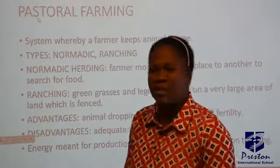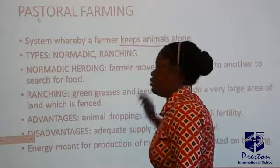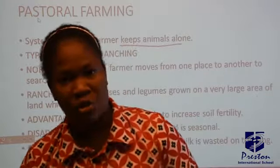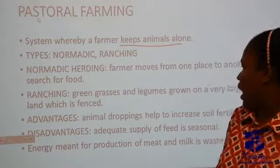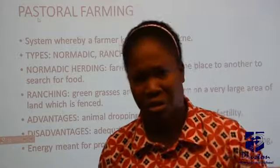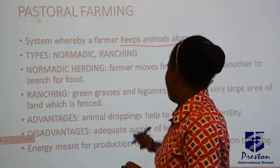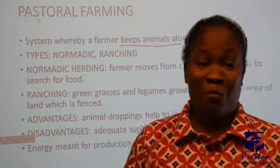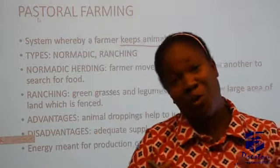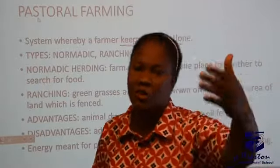The next one is pastoral farming. What is pastoral farming? It is a system whereby a farmer keeps animals alone — just animals, no crops. We have two types: nomadic herding and ranching. In nomadic herding, the farmer moves from one place to another in search of food for the animals. You may have seen people with their cattle, sheep, and goats moving from one place to another.